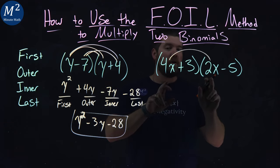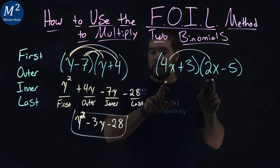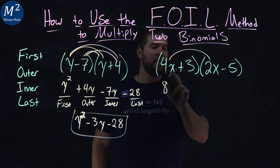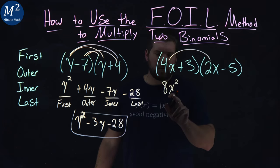4x times 2x are our first values. Coefficients first. 4 times 2 is 8. X's give me the x squared. So 4x times 2x is 8x squared.